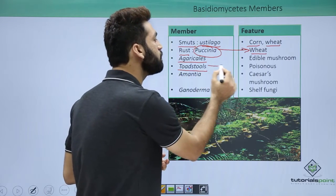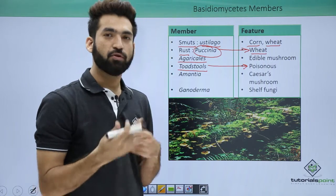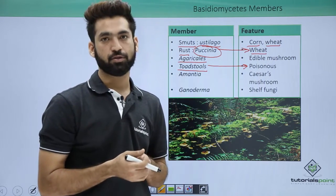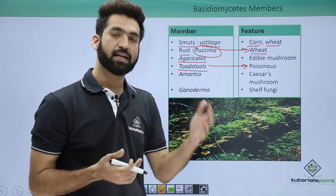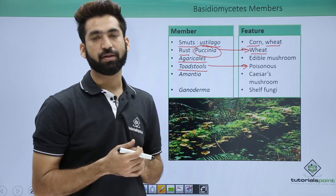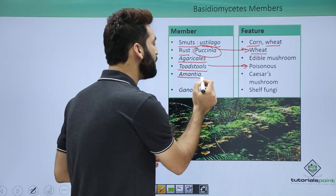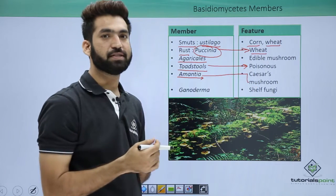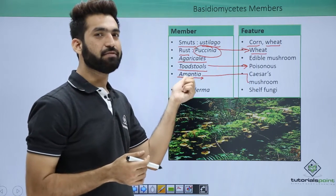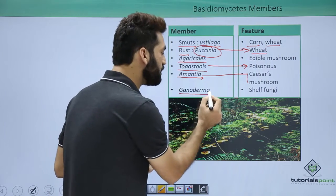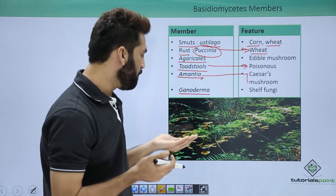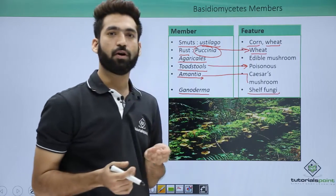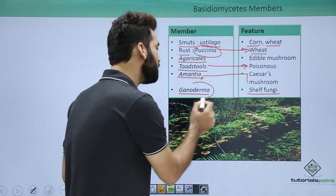Toadstools are mushrooms that are always poisonous. There have been reported cases of toadstools being consumed by people, resulting in deadly poisoning. One notable Basidiomycetes member is Amanita, called Caesar's mushroom. Another is Ganoderma, which forms shelf-like structures over trees and is also called shelf fungi.